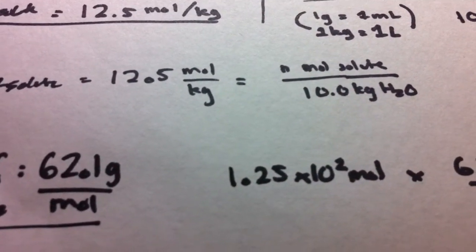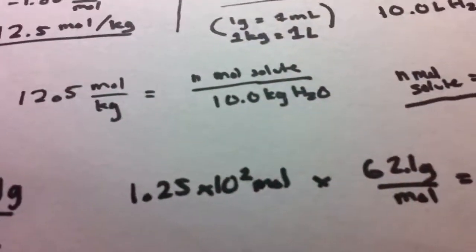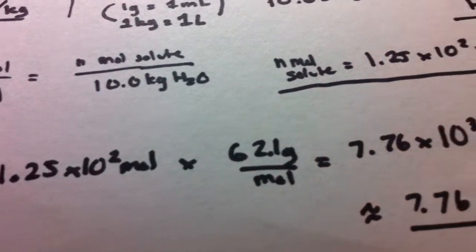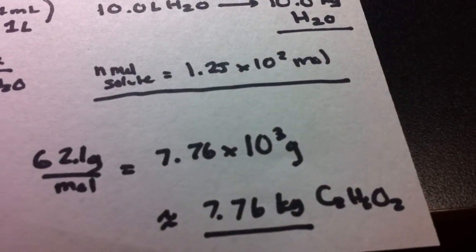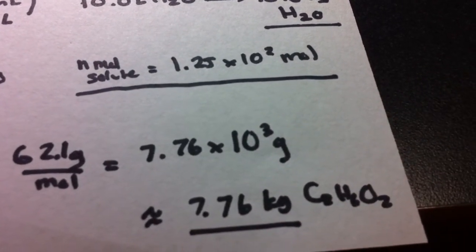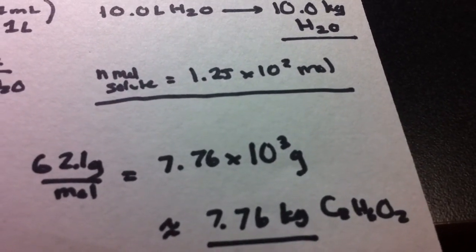Now because we were given the moles, we were given the molar mass, just multiply those two together, units cancel out, and we're just left with grams, 7.76 times 10 to the third grams. And that's going to be how much ethylene glycol we have.